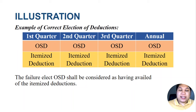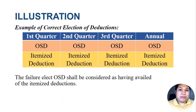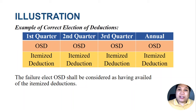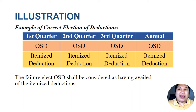The failure to elect OSD is considered as having availed of itemized deductions, since itemized deduction is the default. In the next taxable year, the taxpayer may again choose whether to use OSD or itemized deduction. I hope you learned a lot from this video. Please watch the other videos for detailed discussions about itemized deductions and OSD. Thank you so much for watching.